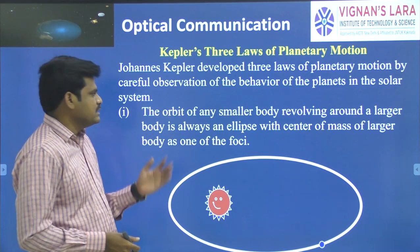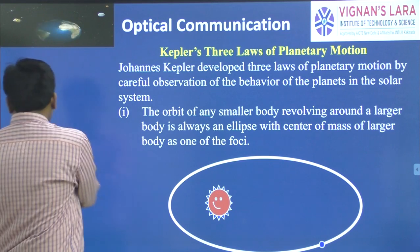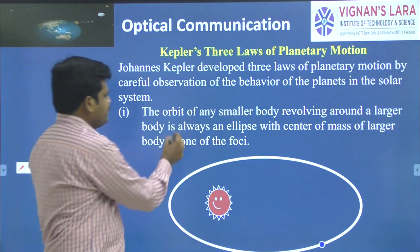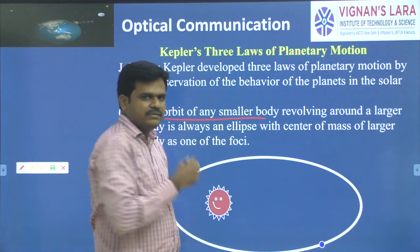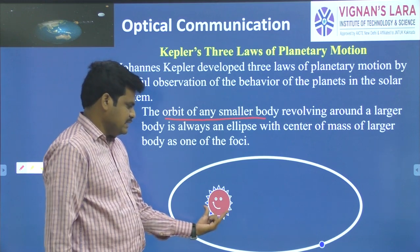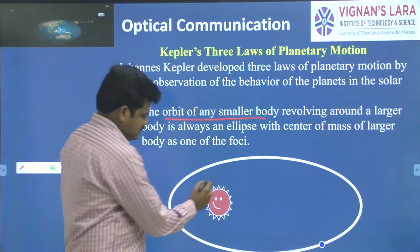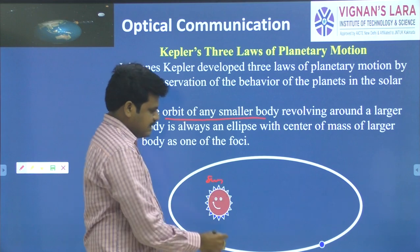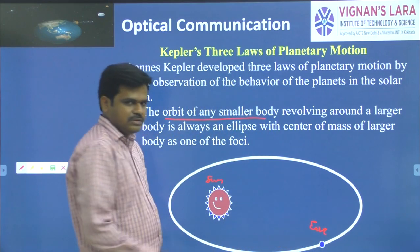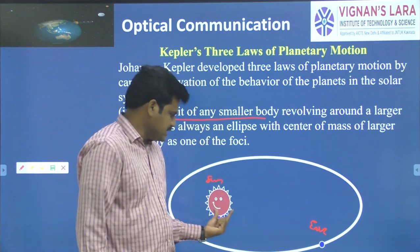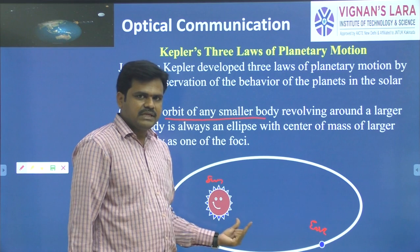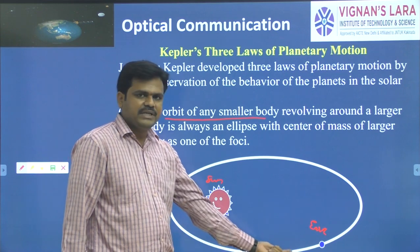Out of three laws, the first law is: the orbit of any smaller body revolving around a larger body is always an ellipse. For example, this is the sun and this is the earth. Earth is a smaller body compared to the sun, so when the earth is revolving around the sun, it tries to follow an elliptical orbit. This is what is the first law proposed by Kepler.